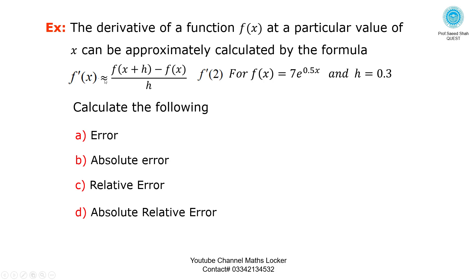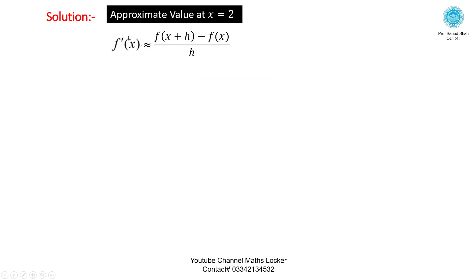From the approximation formula, we can calculate the approximate value at x equal to 2. From the exact equality, we can calculate the exact value at x equal to 2. The step size h is equal to 0.3. Solution: approximate value at x equal to 2, using the formula f dash of x approximately equal to f of x plus h minus f of x, divided by h.